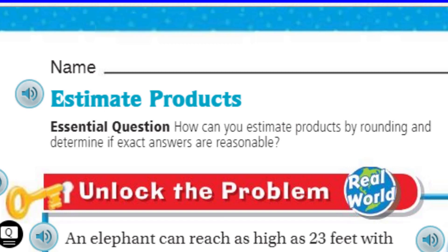I'm trying to make it simple for you. What's our essential question? It's our purpose, our learning target. It says, how can you estimate products by rounding and determine if exact answers are reasonable? So this is kind of like a rounding situation, like with the addition and subtraction of whole numbers, but now we're moving to multiplication. Because estimating products, we know a product is the answer to a multiplication problem.